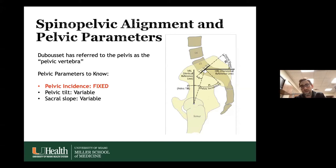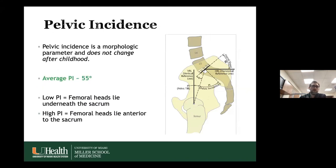The main thing to note is that pelvic incidence is a fixed morphologic parameter — it does increase through childhood but stabilizes in adulthood and does not change after that. Pelvic tilt and sacral slope are postural parameters that do change depending on patient position. The lumbar spine and sacrum do not move independently from one another; they are fixed in the adult spine, so any rotation affects the whole pelvis and sacrum together.